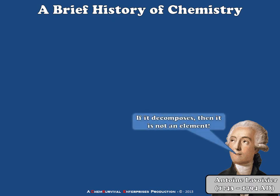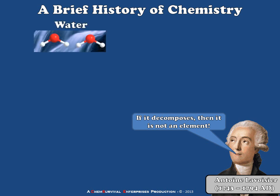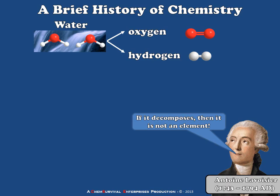The first thing Lavoisier postulated was: if a material can be decomposed, then it can't possibly be an element. If you can break it down into simpler substances, it can't be elemental. He used this to test the idea that water is a fundamental element. Lavoisier didn't know that water was H₂O, but he knew he could use a process called electrolysis to turn water into oxygen and hydrogen gases. He could then recombine them chemically to form water, but could not further decompose the oxygen or hydrogen.